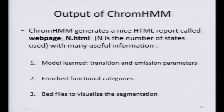ChromHMM creates a nice web page report with links to all output files, usually called webpage_N where N is the number of states. You get three outputs: first, the model learned from the histone modifications; second, the enrichment in functional categories, which helps you assign meaningful labels to your states; and finally the BED files to visualize the segmentation.